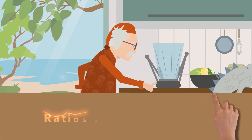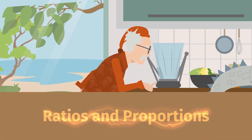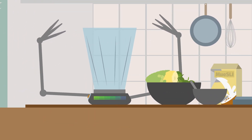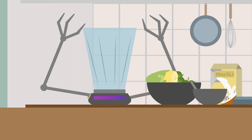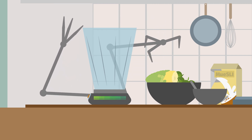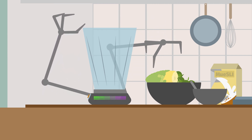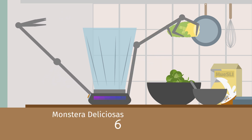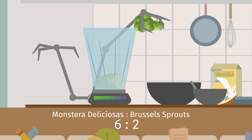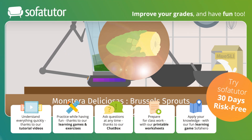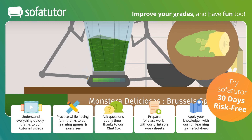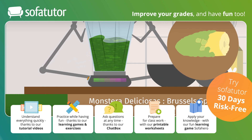Dr. Evil uses his knowledge of ratios and proportions to create the perfect concoction. Ratios are used to compare quantities, and two equal ratios create a proportion. He adds six parts Monstera Deliciosas to two parts Brussels sprouts. Monstera Deliciosa is a tasty tropical fruit — imagine a banana-pineapple hybrid.